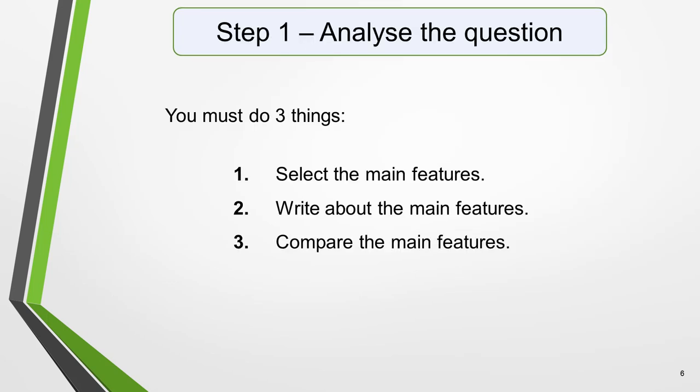Sentence 2 tells you what you have to do. You must do three things. Select the main features, write about the main features and compare the main features. All three tasks refer to the main features of the graphic, so you do not have to write about everything. Just pick out two or three key features and you'll have plenty to write about.